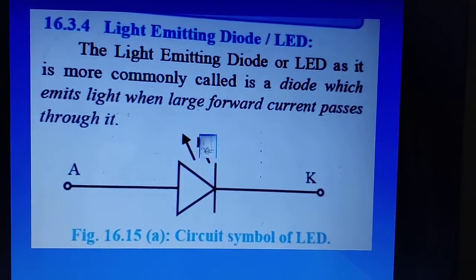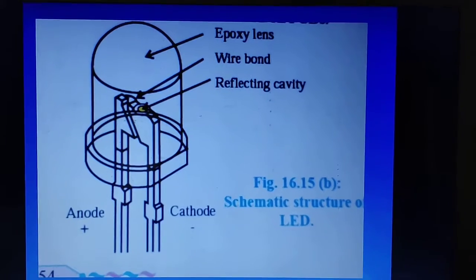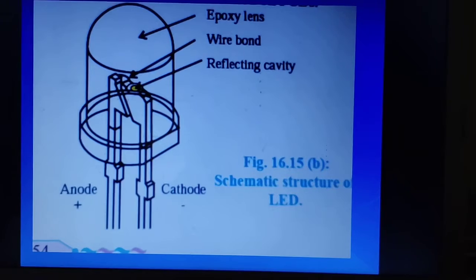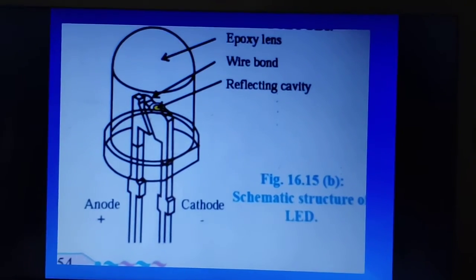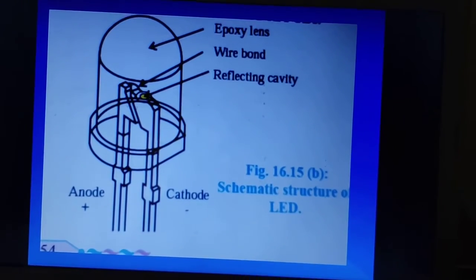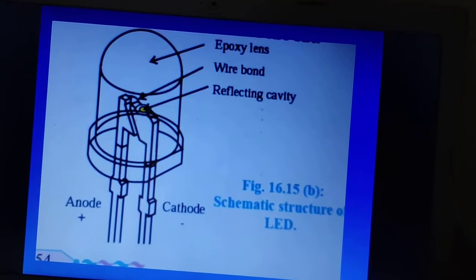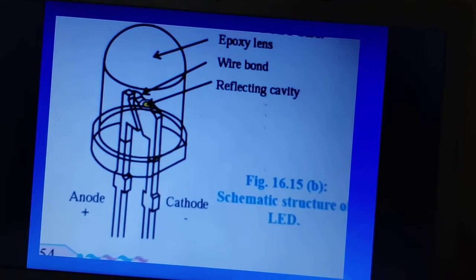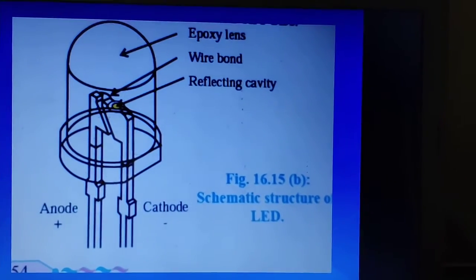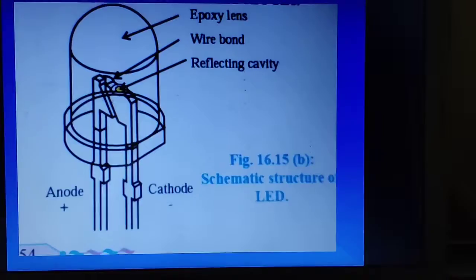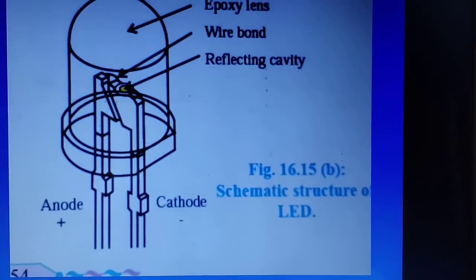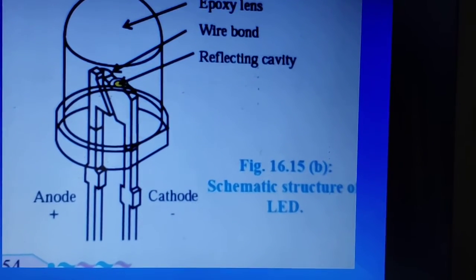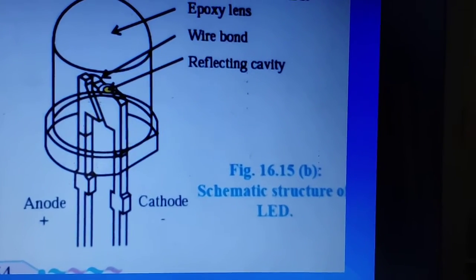Let us go ahead. Now, what is the principle on which the photodiode works? See, actually the schematic structure of LED is like this. It is somewhat enclosed. The anode and the cathode are enclosed in a small bulb-like structure. That is the epoxy lens. Inside, we have a wire bond and a reflecting cavity. So this is the detailed diagram of the photodiode. First we have seen the symbol and the second was the schematic structure of LED.